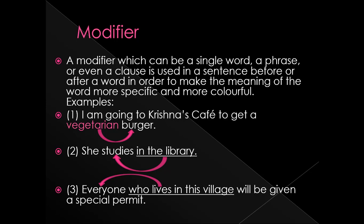Second example: 'She studies in the library.' Here, 'in the library' is a prepositional phrase — a group of words without any subject and finite verb. This phrase is modifying the verb 'studies.' She studies where? In the library. So 'in the library' is a phrase modifier, and it comes after the main word.